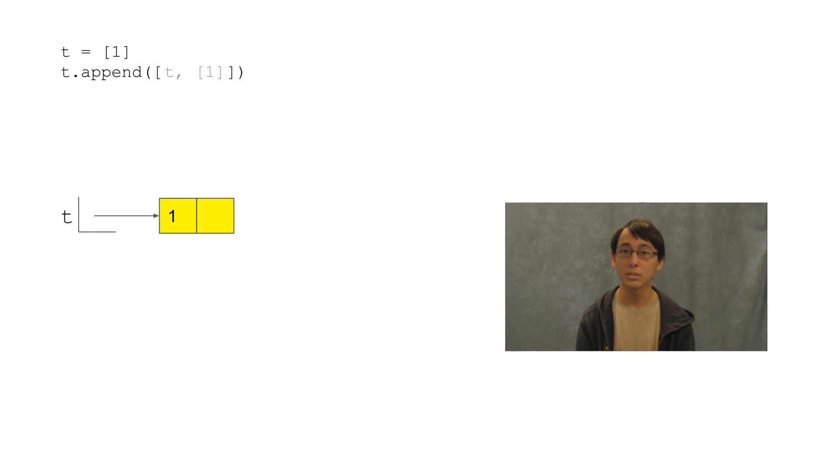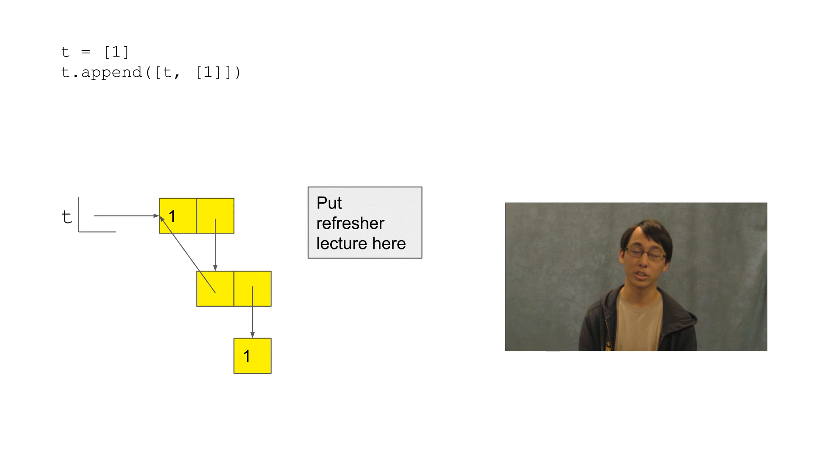We're appending a list, which should tell you to draw an arrow pointing to another list. Well, what does this list contain? The first element is T, so we'll draw an arrow from the first box here all the way to the first box here. The second element of the list is another list containing one, which looks like this. I hope you know why. If not, then click here for a refresher, because it only gets harder.